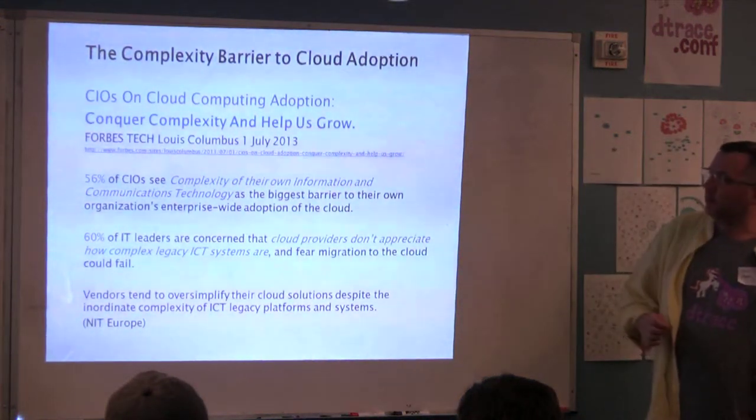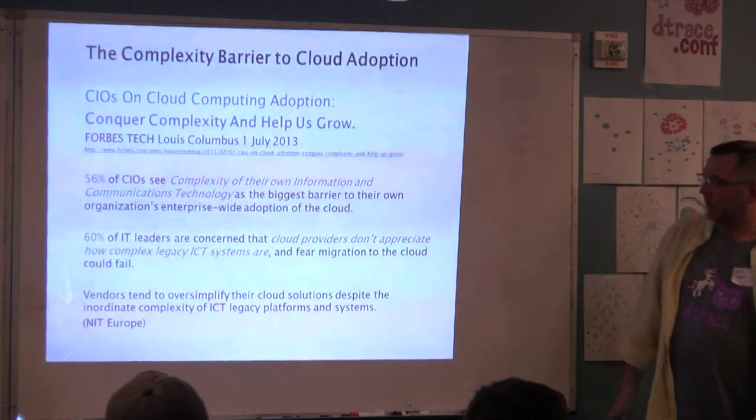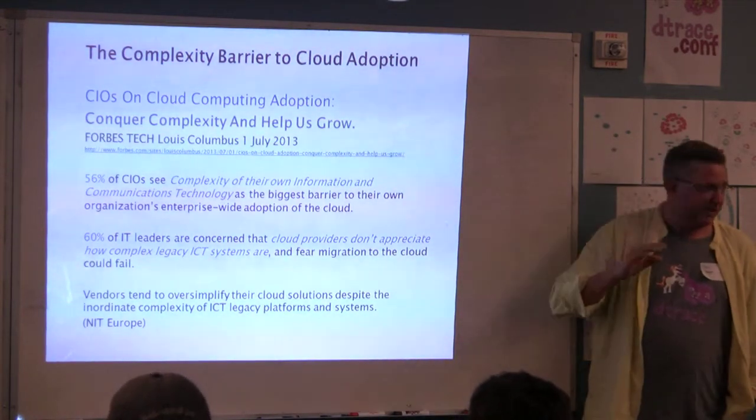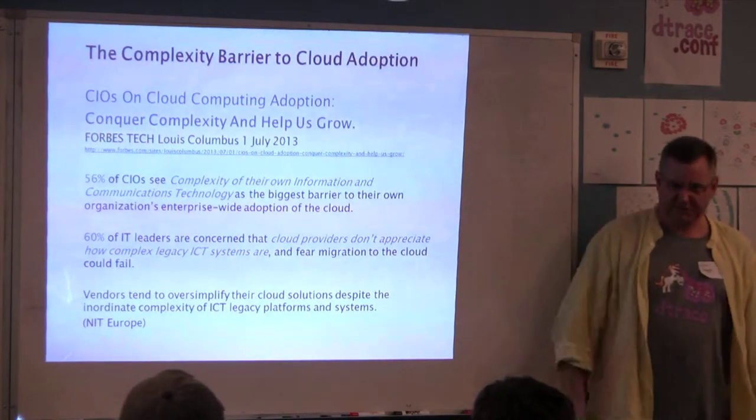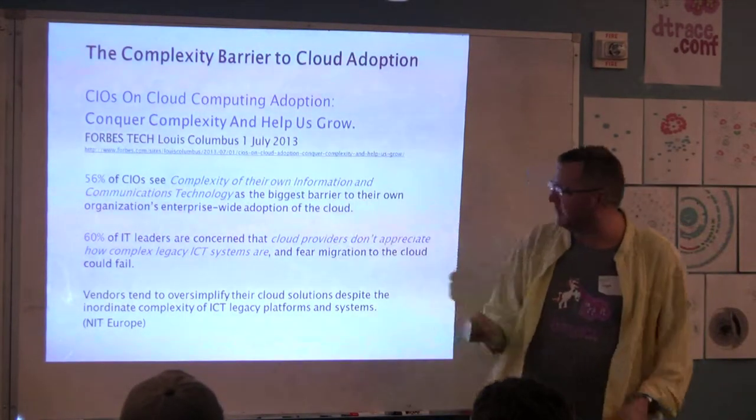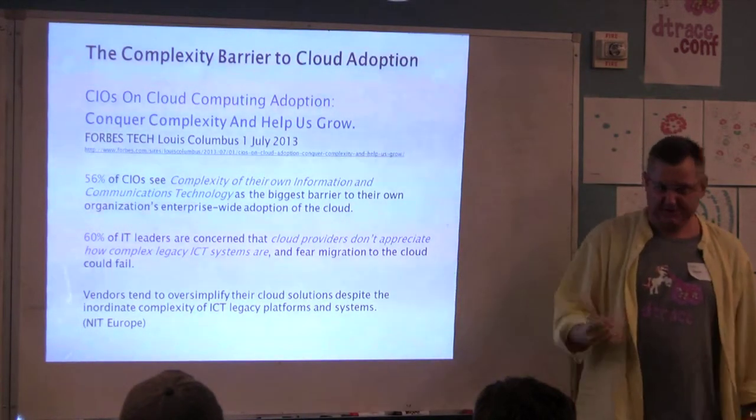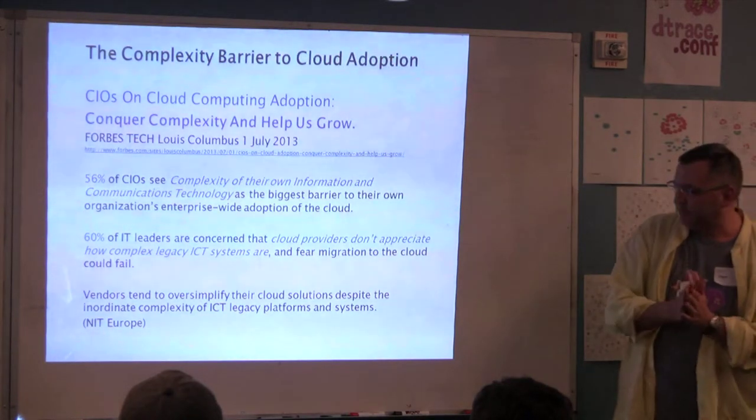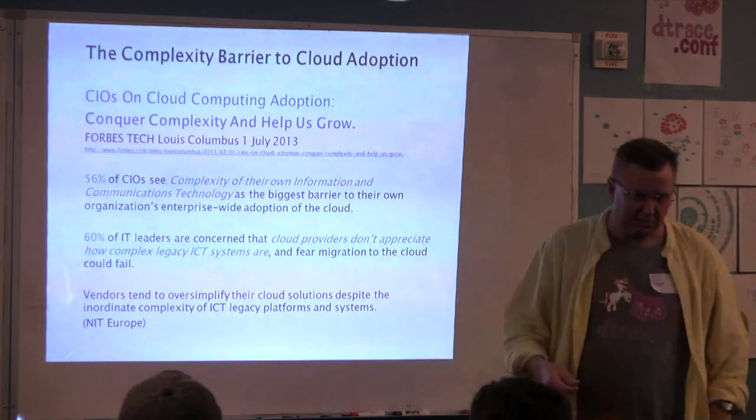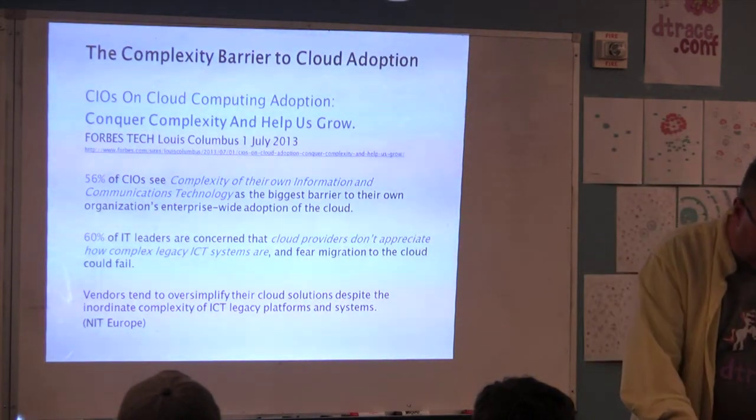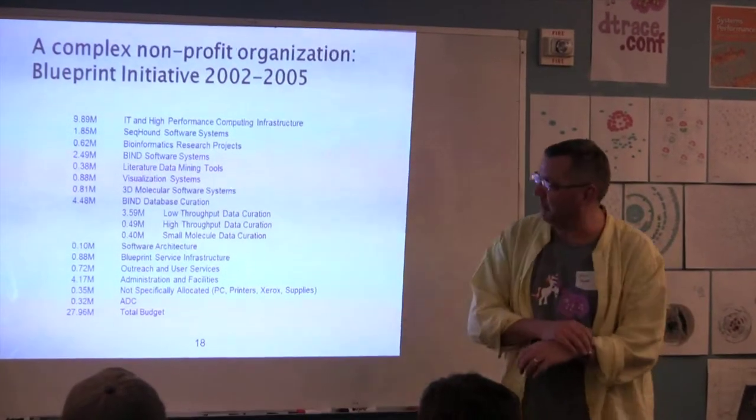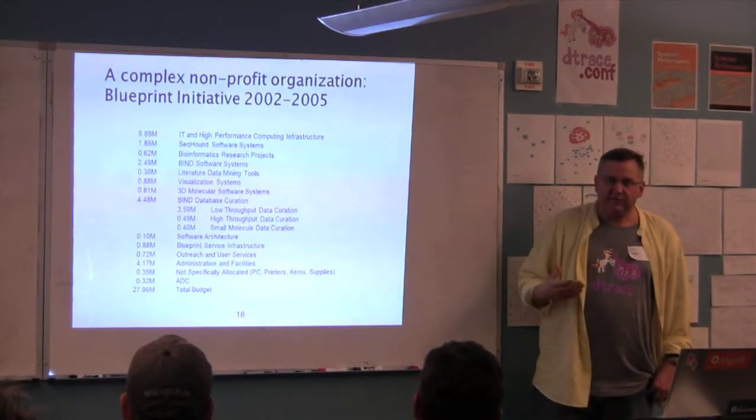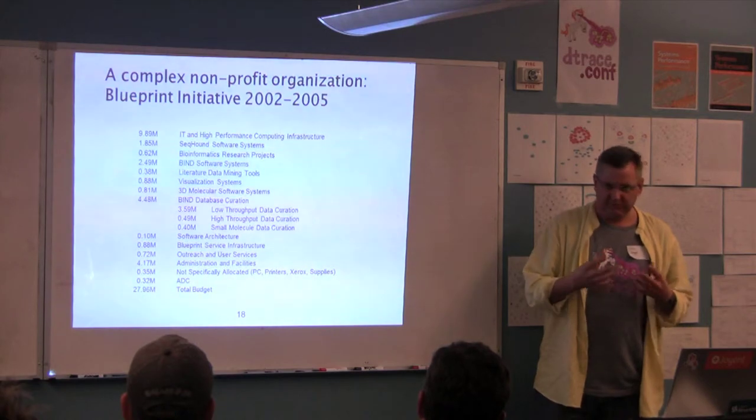So with regard to cloud computing, a very recent article came out after an analysis and interview of chief information officers. And 56% of them say they would put on their Facebook status, complexity of their own information and communications technology is the biggest barrier to organizational enterprise-wide adoption. And 60% are concerned that cloud providers don't appreciate how complex their systems are. And so I was a CIO once and ran a nonprofit organization building databases of molecular complexity and how components inside cells fit together.